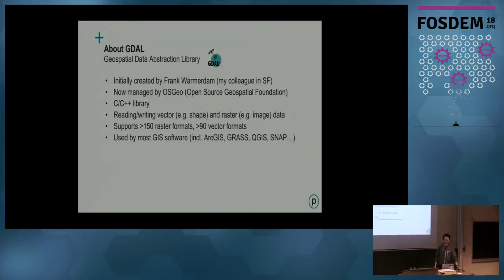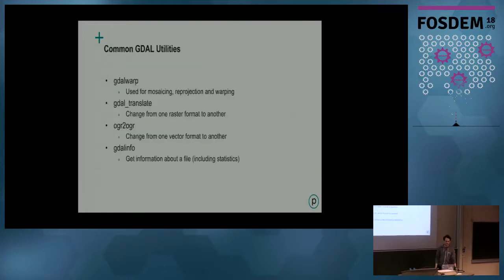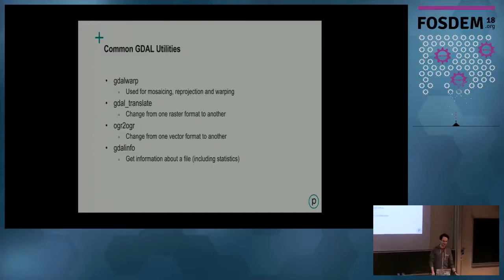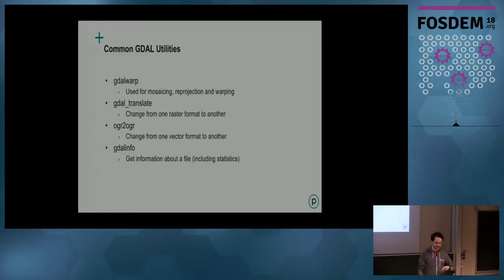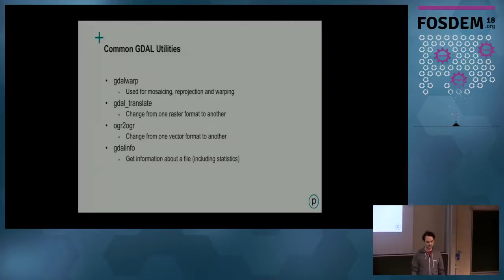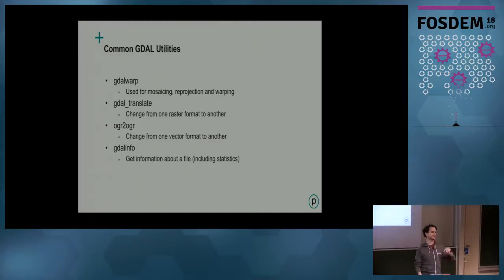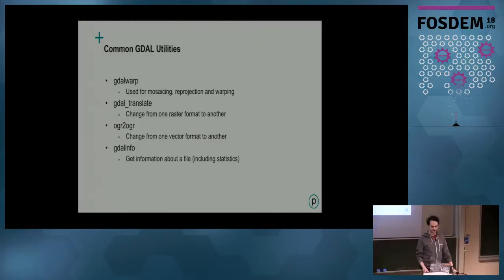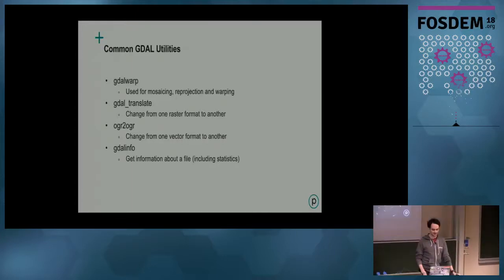Some of the most common GDAL utilities are: GDAL warp, for mosaicing, reprojection, and warping; GDAL translate, to change from one raster format to another; the vector equivalent OGR2OGR; and GDAL info, where you can not just get information but also generate a whole bunch of statistics and get it in a variety of different formats.